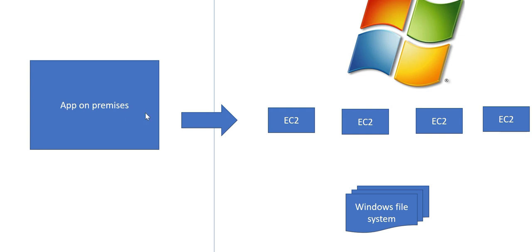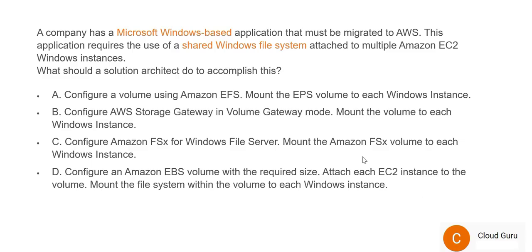The story for question 66: you have an app on-premises that you want to move to AWS on EC2 instances. These EC2 instances are on Windows platform, and they will be connected to a Windows file system. Remember — it is Windows platform with a Windows file system.